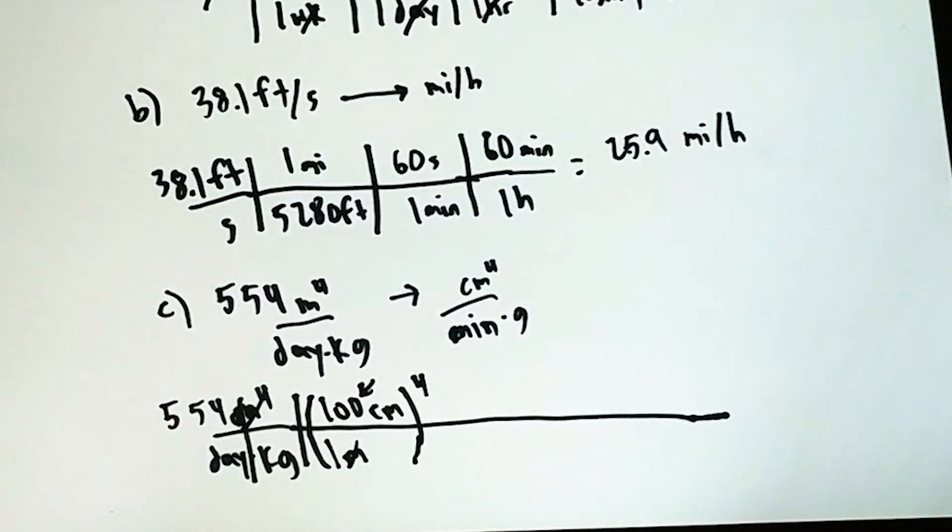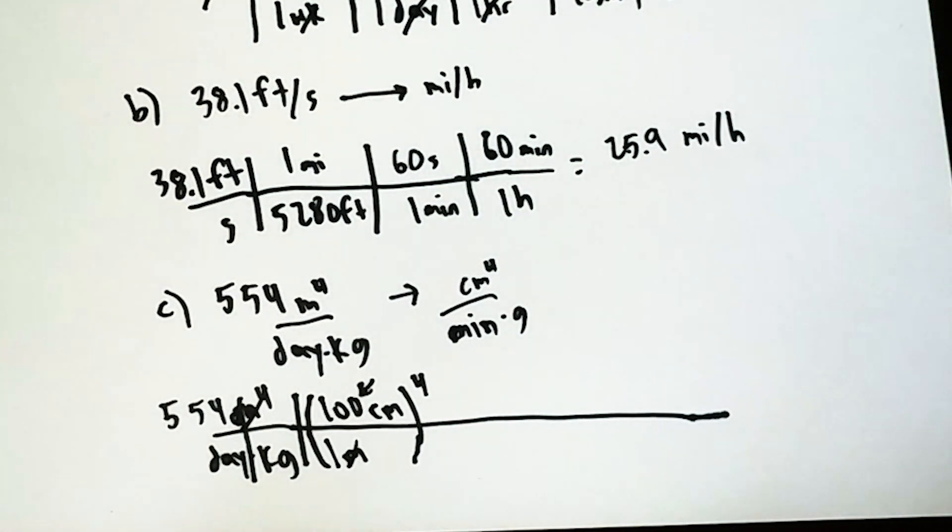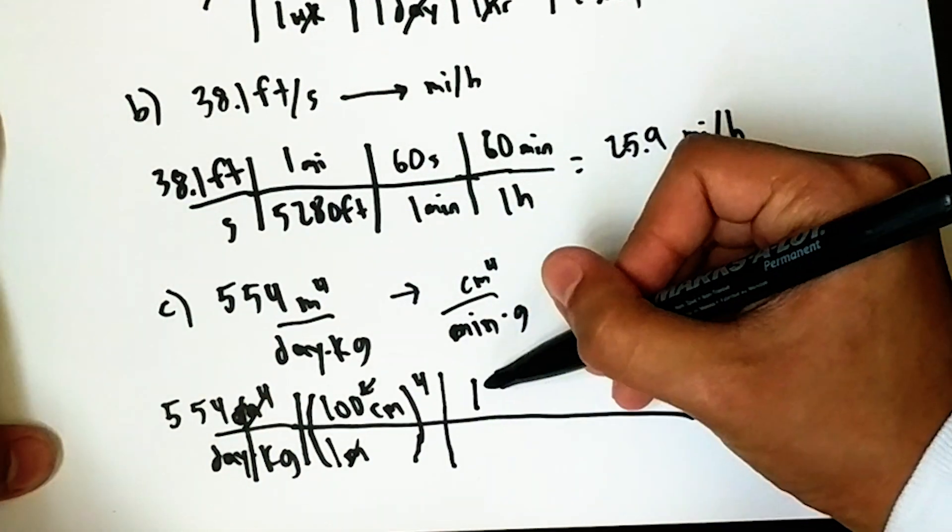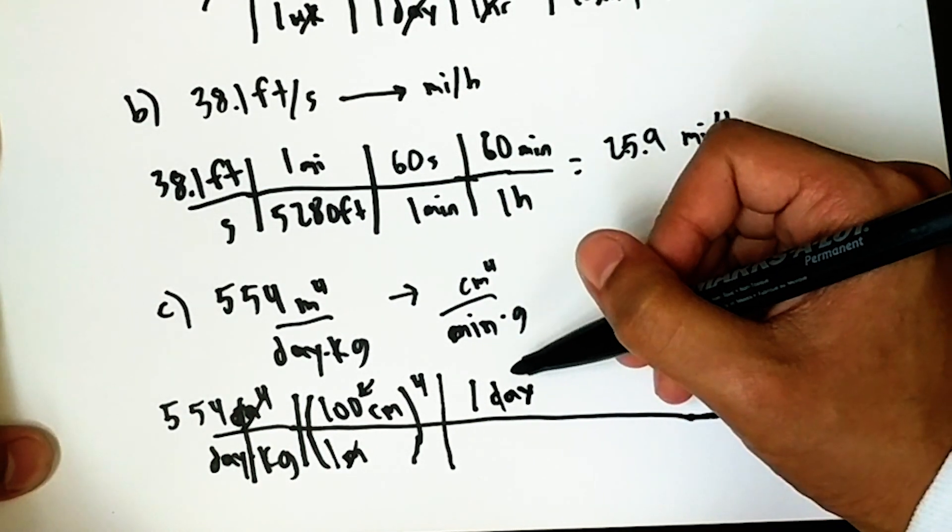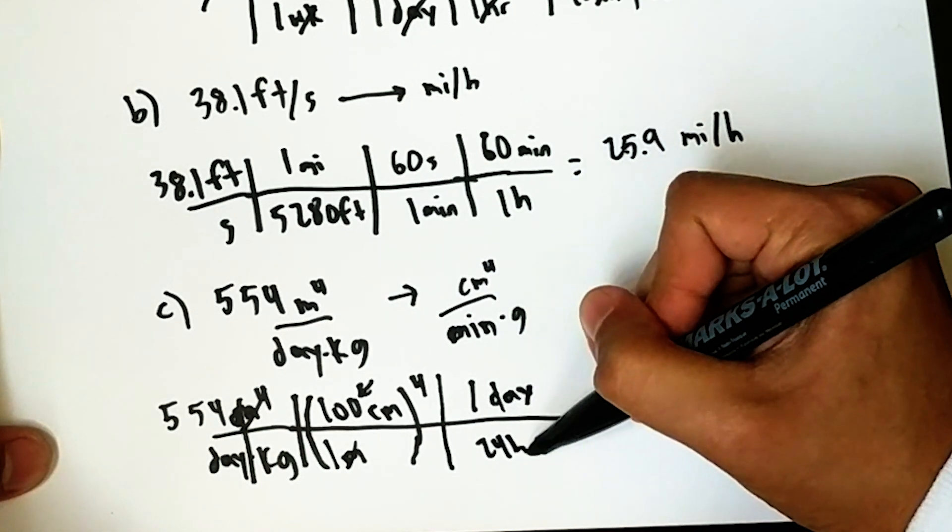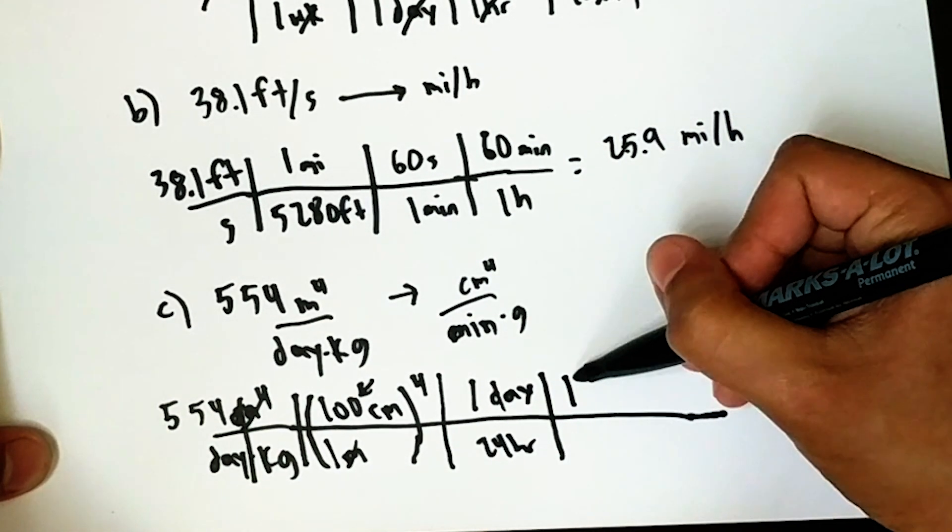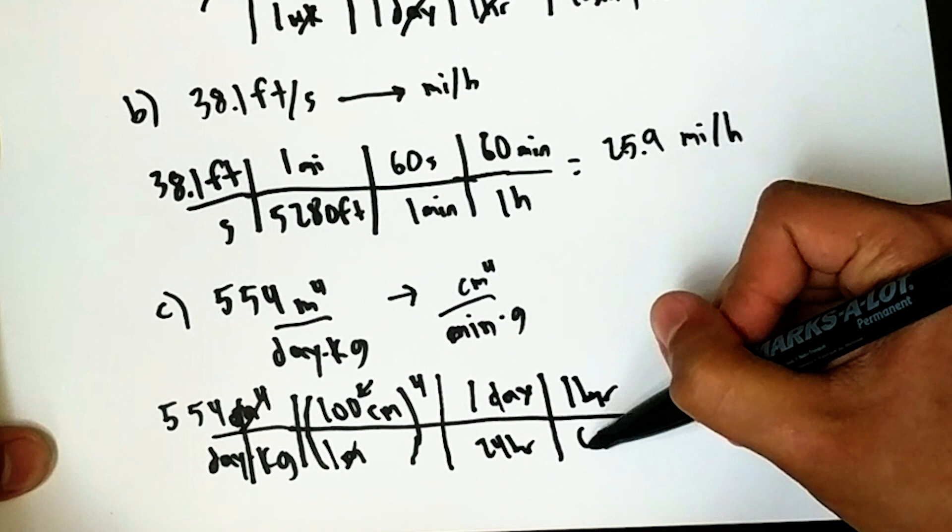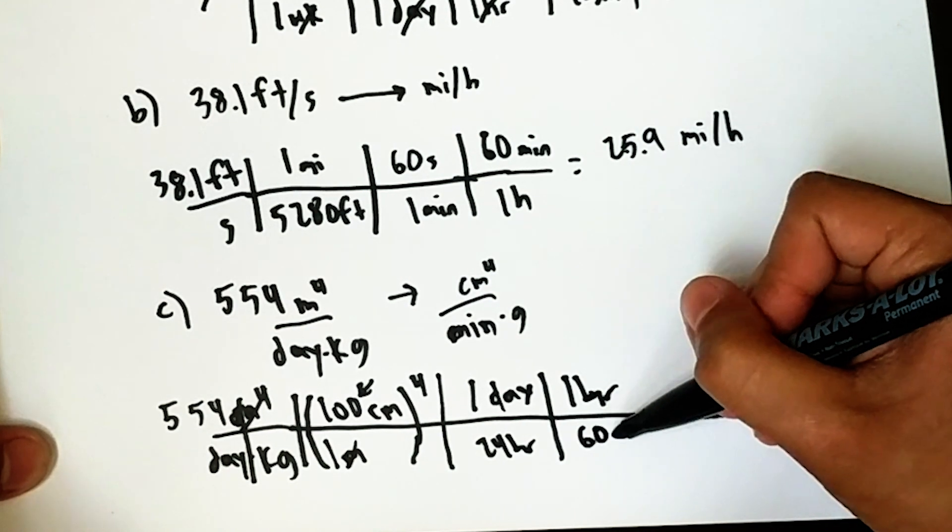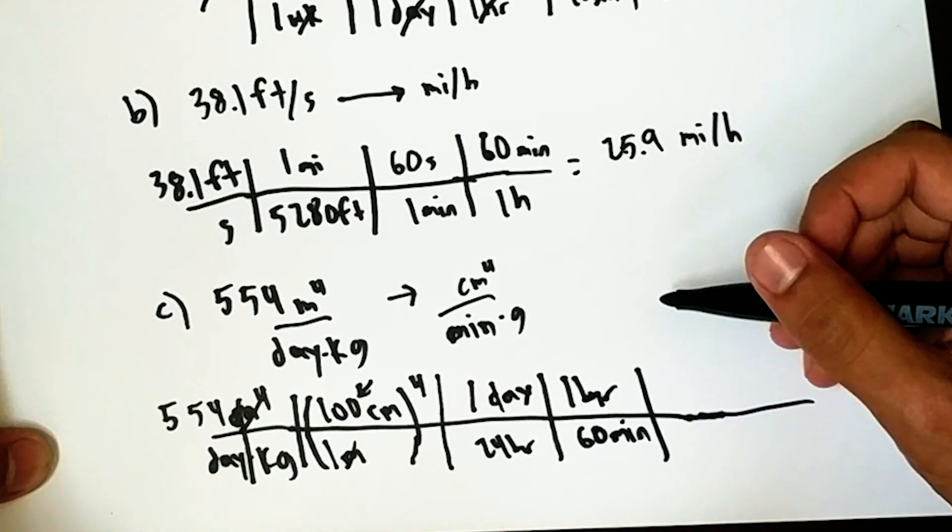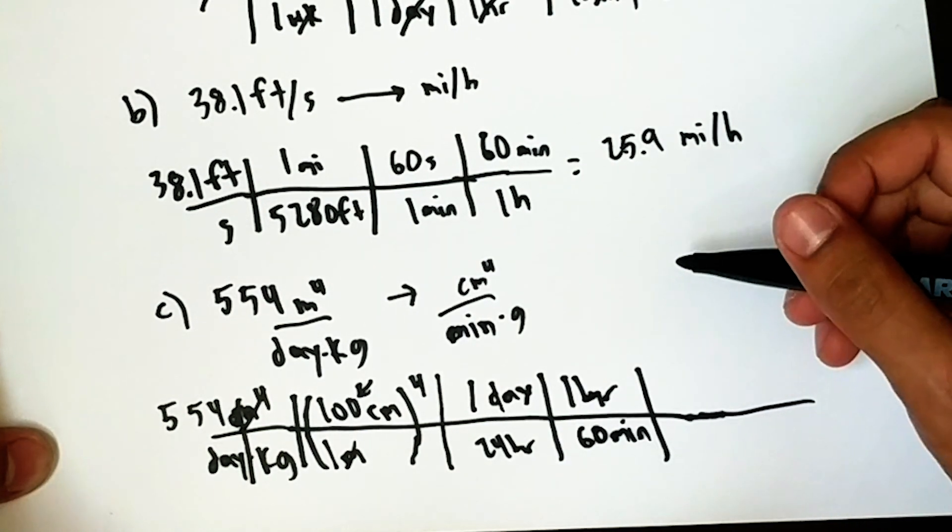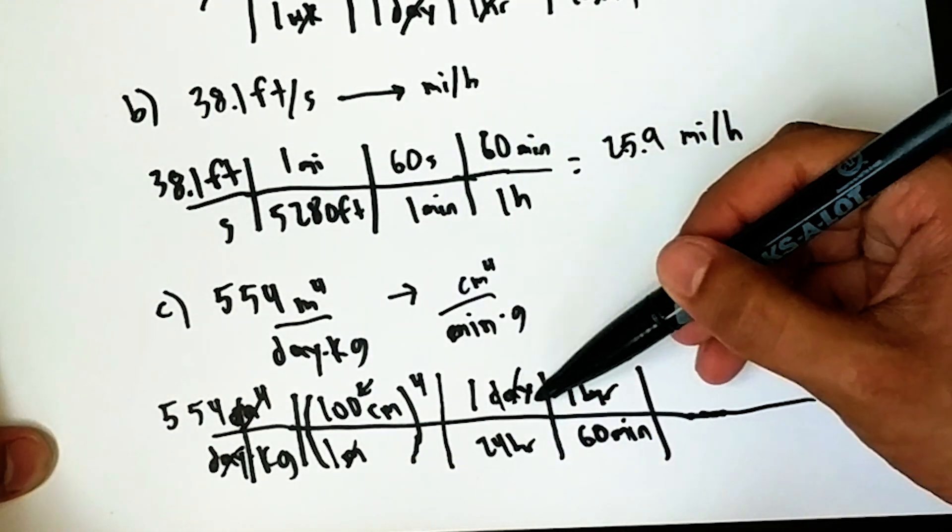Anyway, tell me what you think. Let's just continue. So, days. One day. Is going to be, what? 24 hours. And, one hour is going to be 60 minutes. We're good with that one. So, we can cancel out days, days, hours, hours. We've got minutes. That's good.